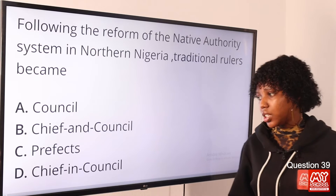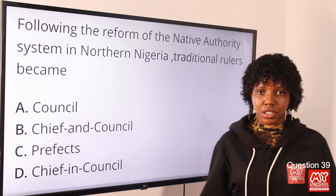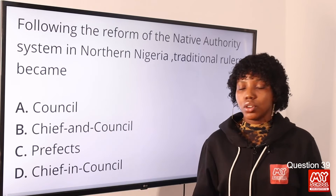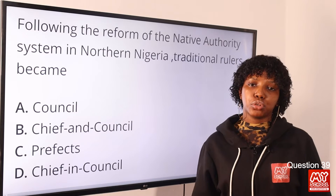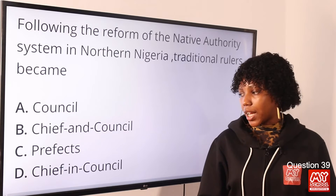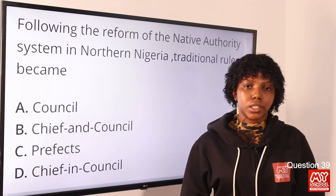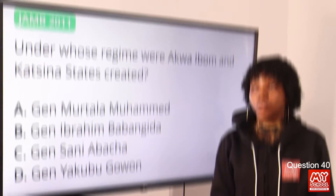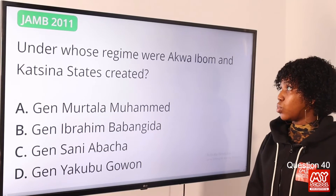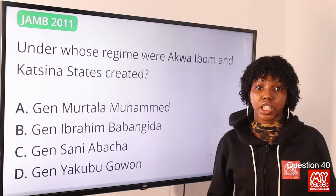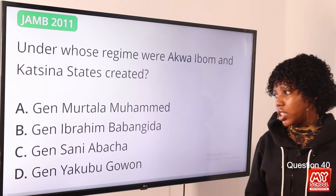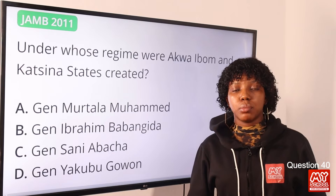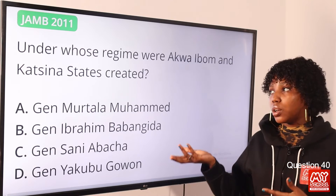Question 39: Following the reform of the native authority system in Northern Nigeria, traditional rulers became — the answer is option D, Chief-in-Council. Note that it is Chief-in-Council, not Chief-and-Council. In 1952, the native authority was abolished and Chief-in-Council was put in place.